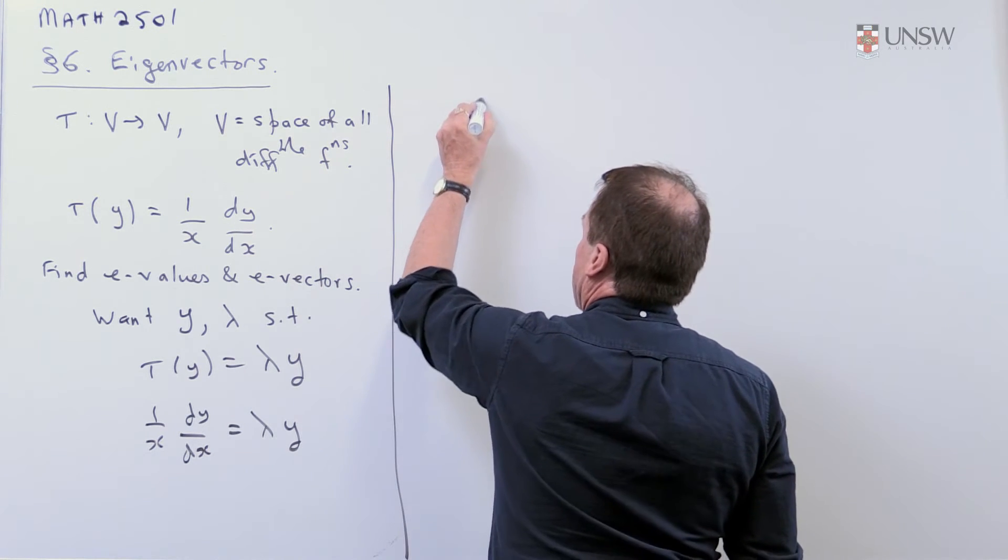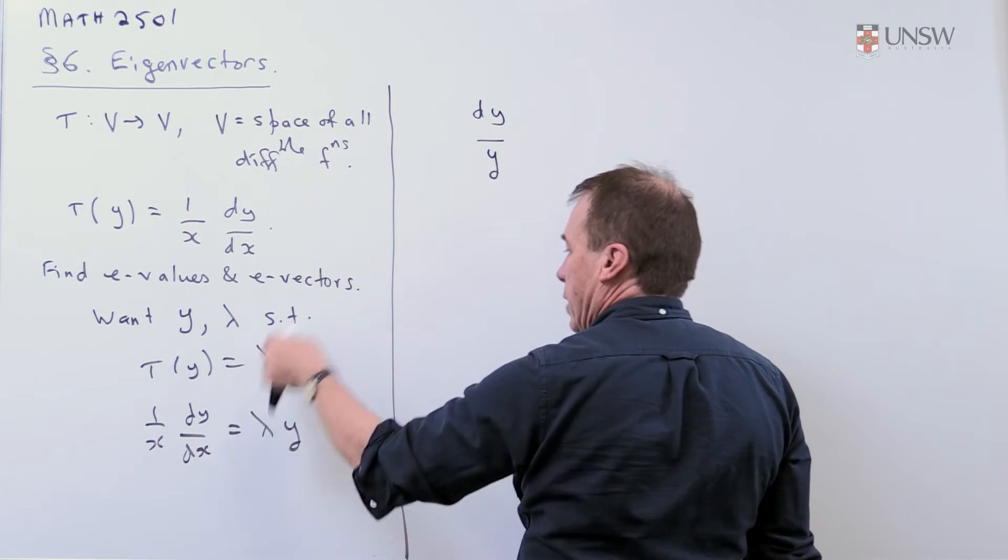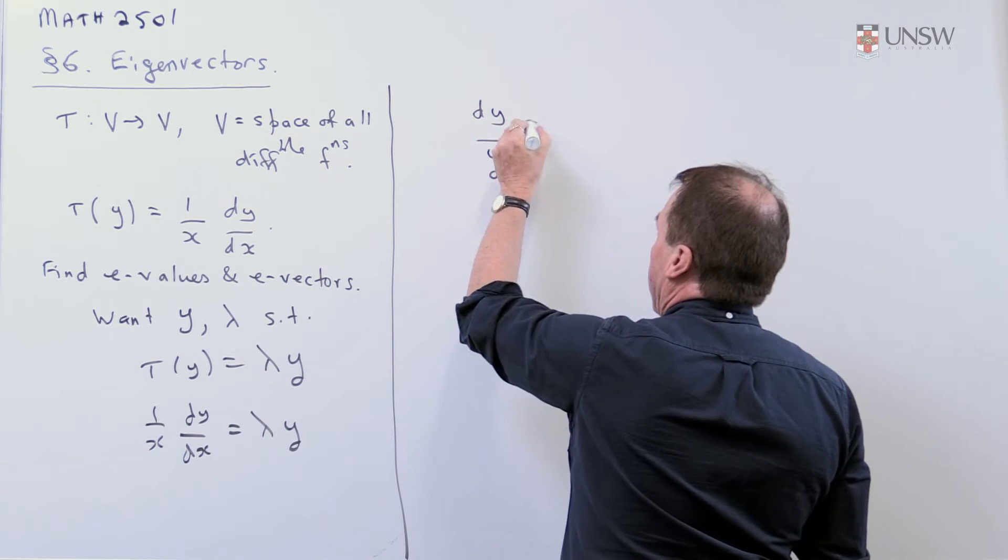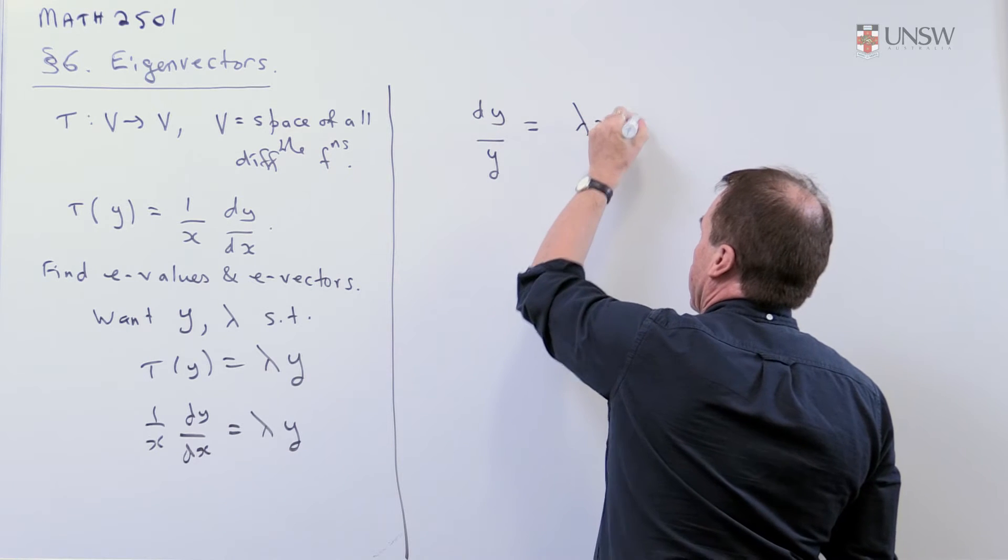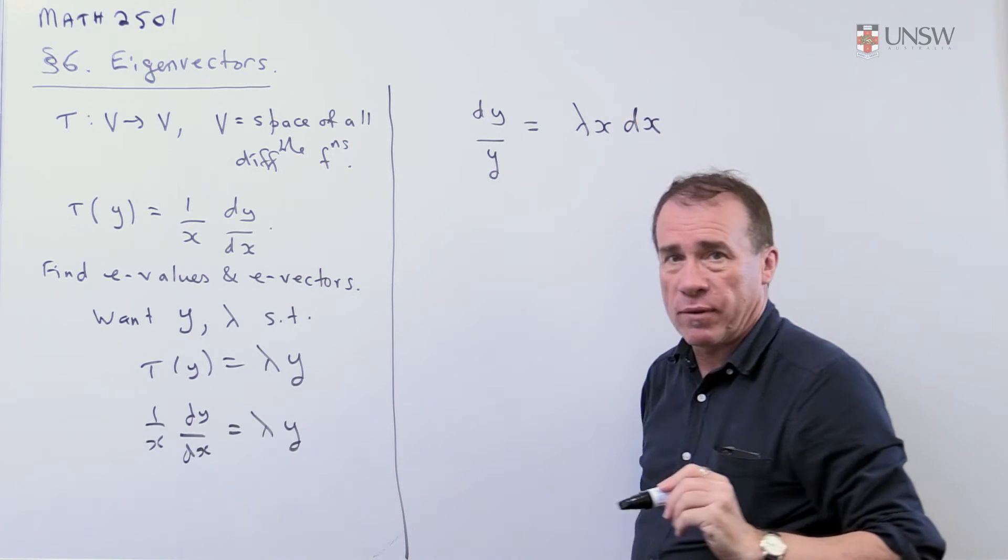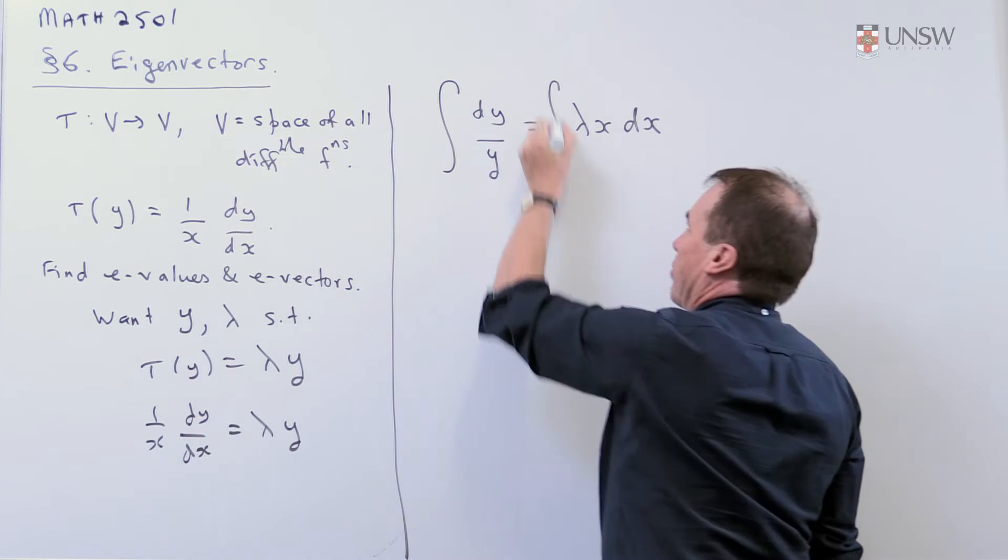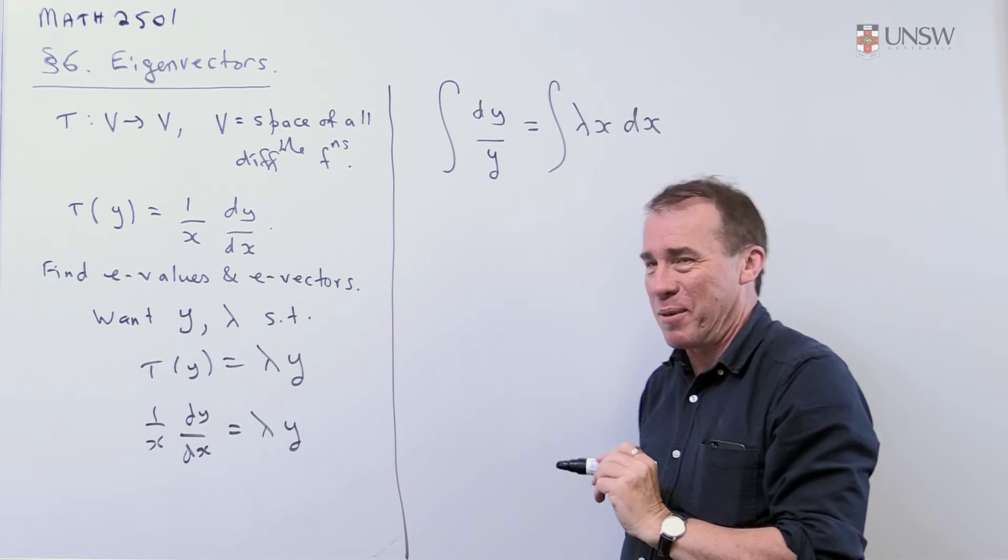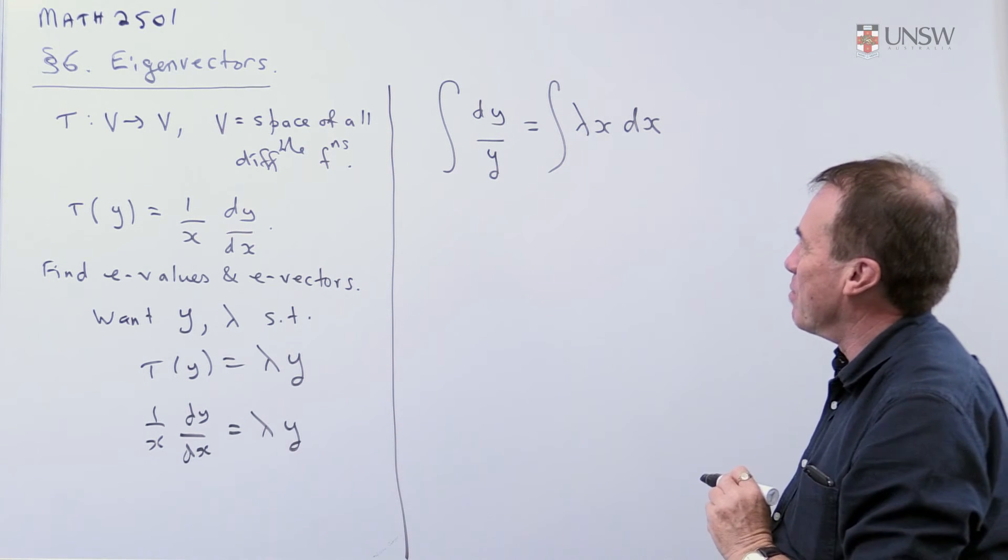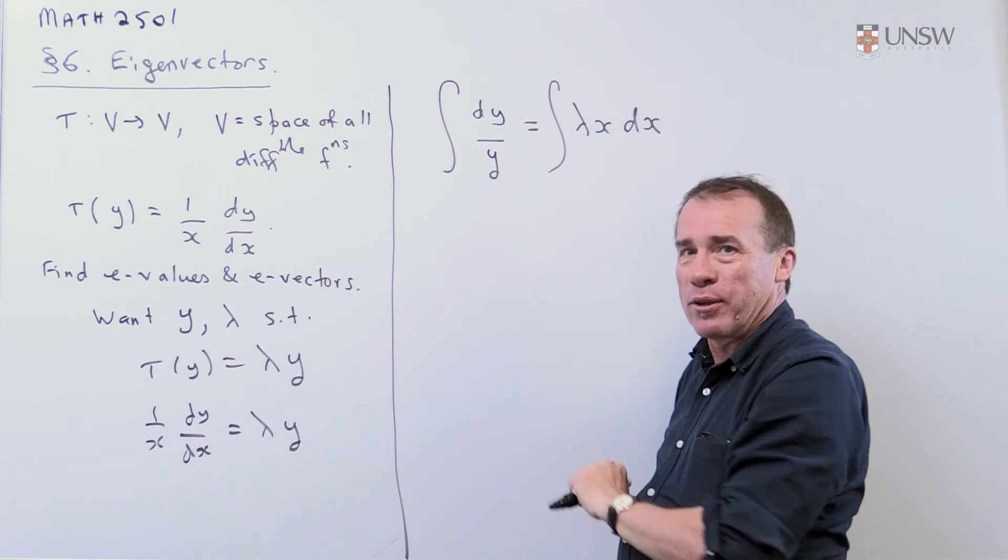Separating the variables, I'm going to get dy/y, and I take this up, I get λx dx. I'm never quite sure what that means, so before anyone looks, I'm going to put in some integral signs, and now I'm happy. Now that has some meaning, and so I can integrate both sides.